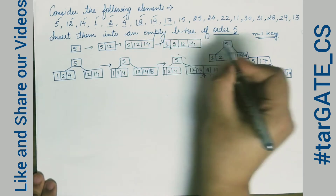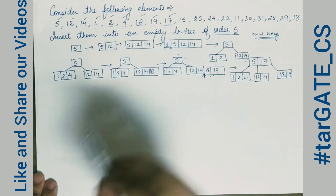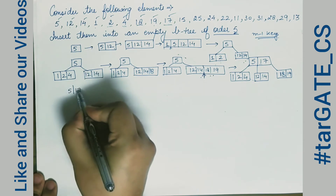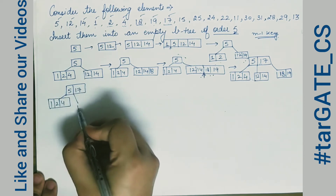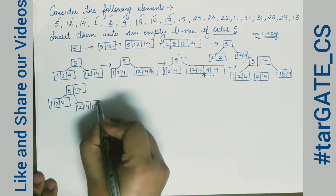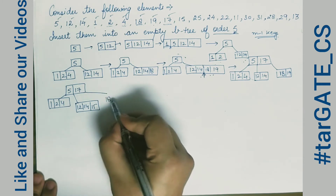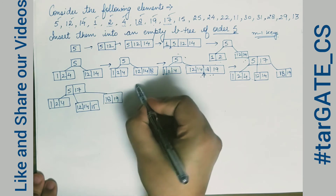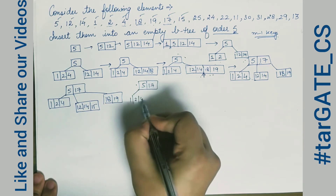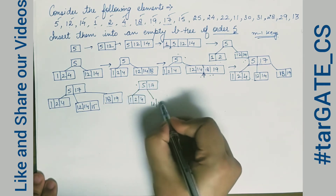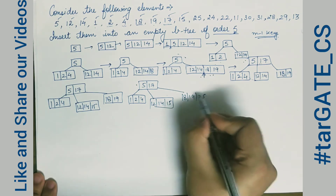Next we insert element 15. The root is 5 and 17; on the left we have 1, 2, 4; in the middle we have 12 and 14, so 15 is inserted there. On the right we have 18 and 19. We then insert element 25, which goes to the right side, giving 18, 19, 25.